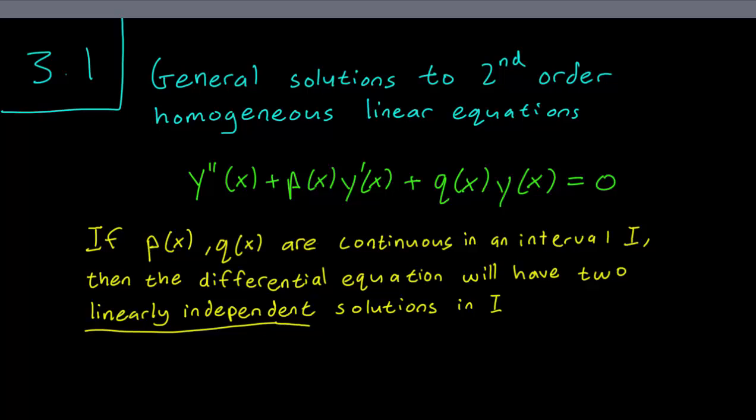And generally this is the type of equation that you'll see in the rest of this course. p(x) and q(x) will always be continuous in the interval that we care about. And when this is true, we will always have two linearly independent solutions, two different solutions.